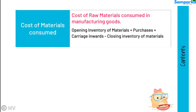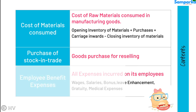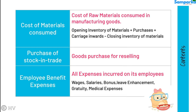Cost of materials consumed shall disclose the cost of raw materials consumed in manufacturing the goods. Purchase of stock in trade shall show goods purchased for reselling. All expenses incurred on employees are disclosed under employee benefit expenses.